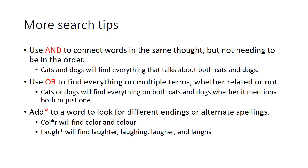If you use the word AND in between your terms, it connects the terms in the same thought without putting them right next to each other. In this example, "cats AND dogs" will find everything that talks about both cats and dogs without looking for "cat dogs," which might be a specific breed.